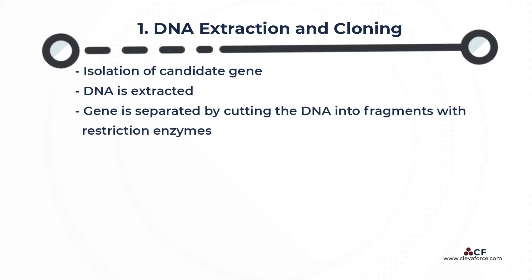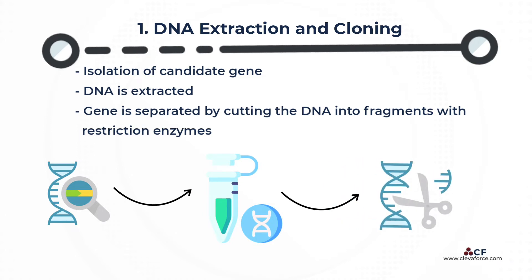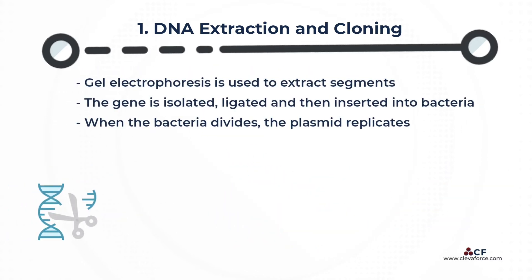DNA extraction and cloning. Following the selection of a gene based on the goal of the research, the candidate gene is isolated. The gene-containing cell is opened and DNA is extracted. The gene is separated by fragmenting the DNA with restriction enzymes or amplifying the gene segment with polymerase chain reaction. These segments can then be extracted using gel electrophoresis.